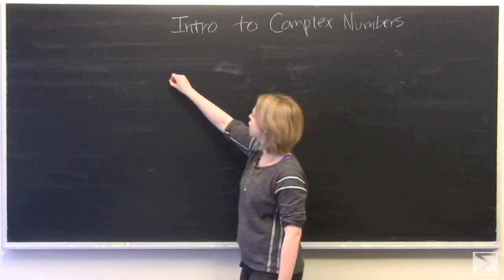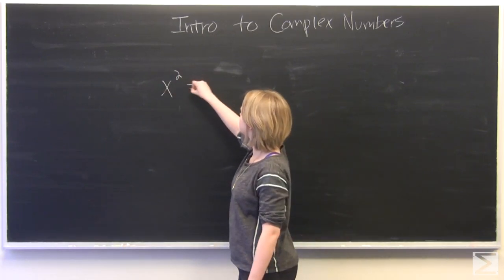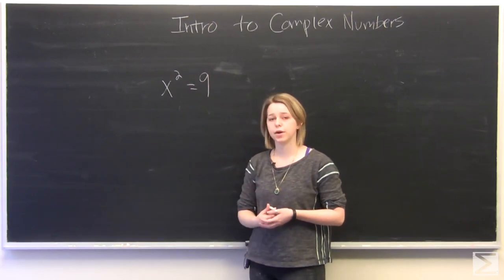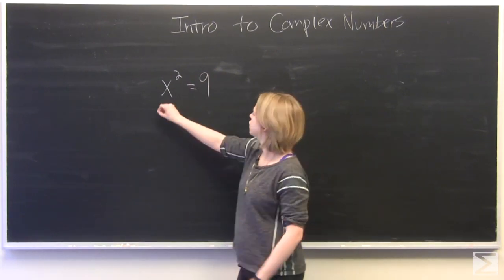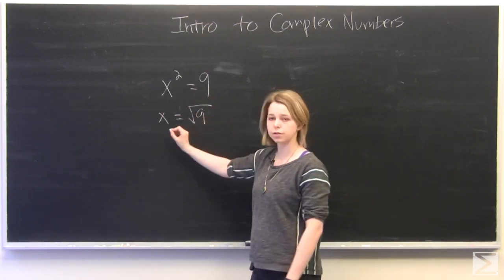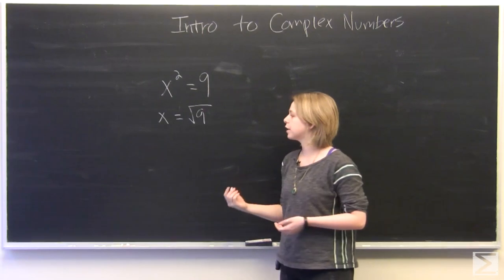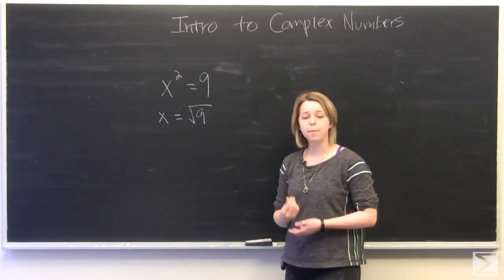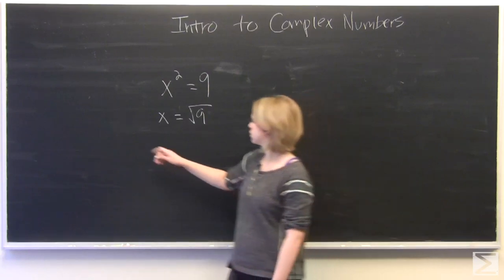So let's start off with an equation. If we are solving for x where x squared is equal to 9, it's the same as asking you to take the square root of 9 to solve for x. And at this point, we simply look for a number which, when multiplied by itself, is equal to 9.